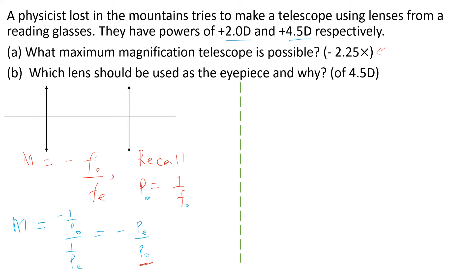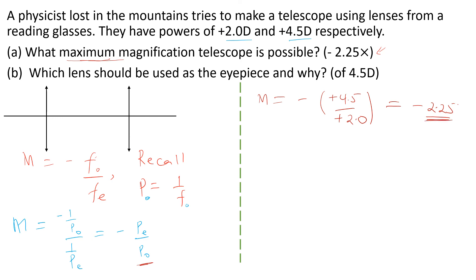Since the question asks for maximum magnification, we determine which arrangement gives the largest value. Placing positive 4.5 D as the eyepiece and positive 2.0 D as the objective gives magnification of negative 4.5 over 2.0, which equals negative 2.25. Interchanging the lenses would give a magnitude less than 1, which is smaller. Therefore the maximum magnification possible is 2.25.